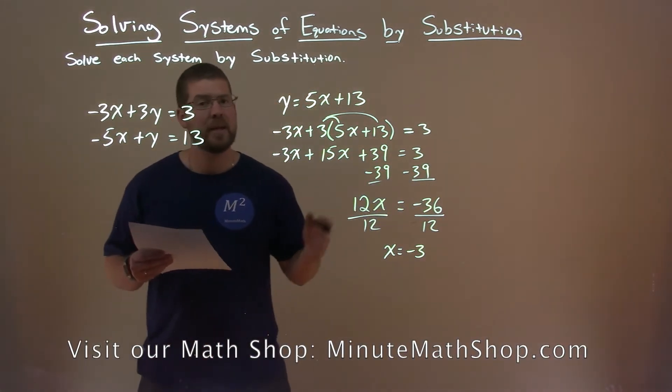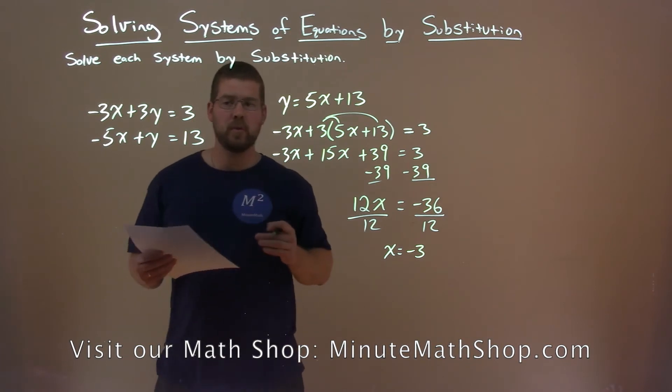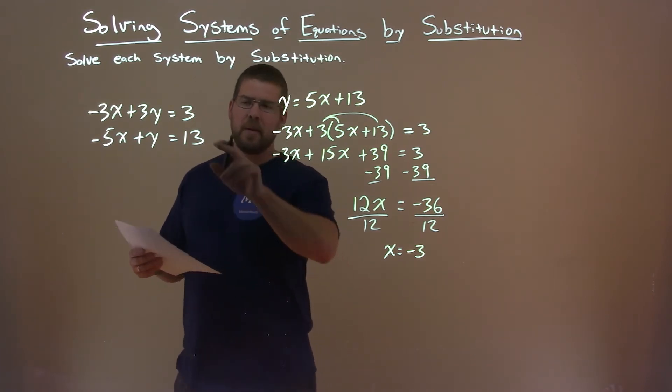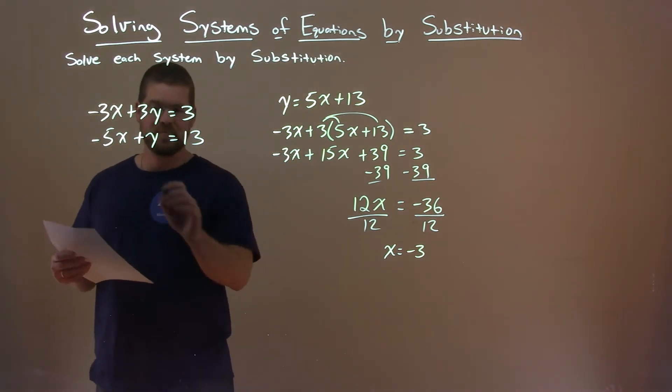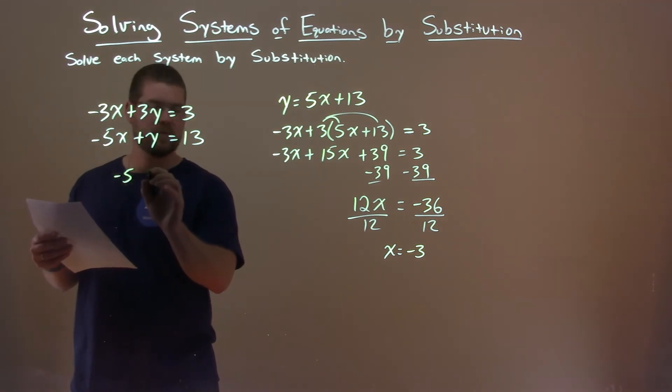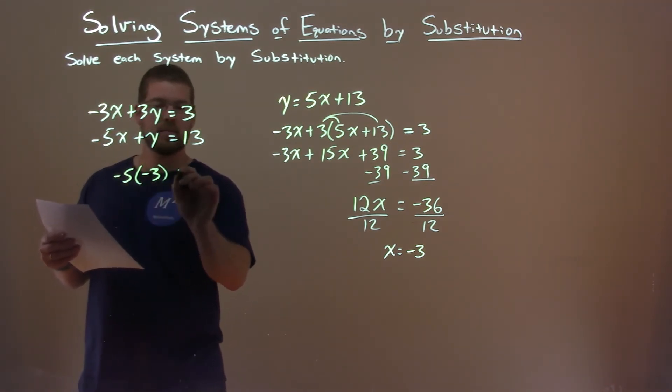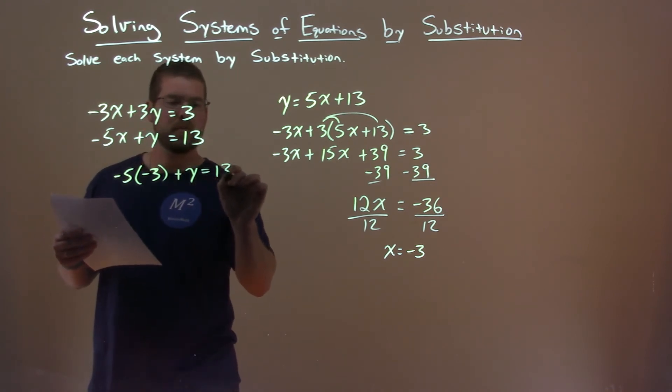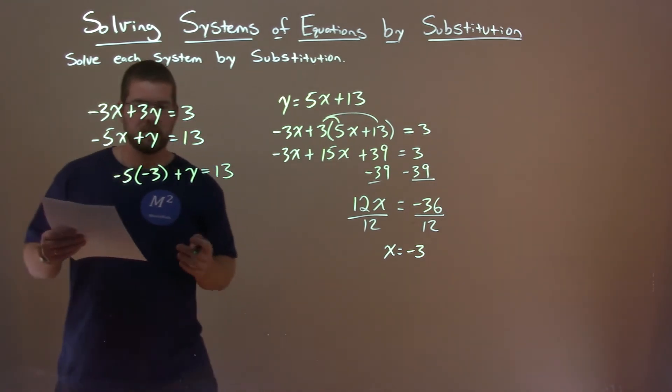We take that information and need to plug it into one of our first two equations to solve for y. I picked the second equation because I think it's easier. So -5 times -3 for x, plus y equals 13.